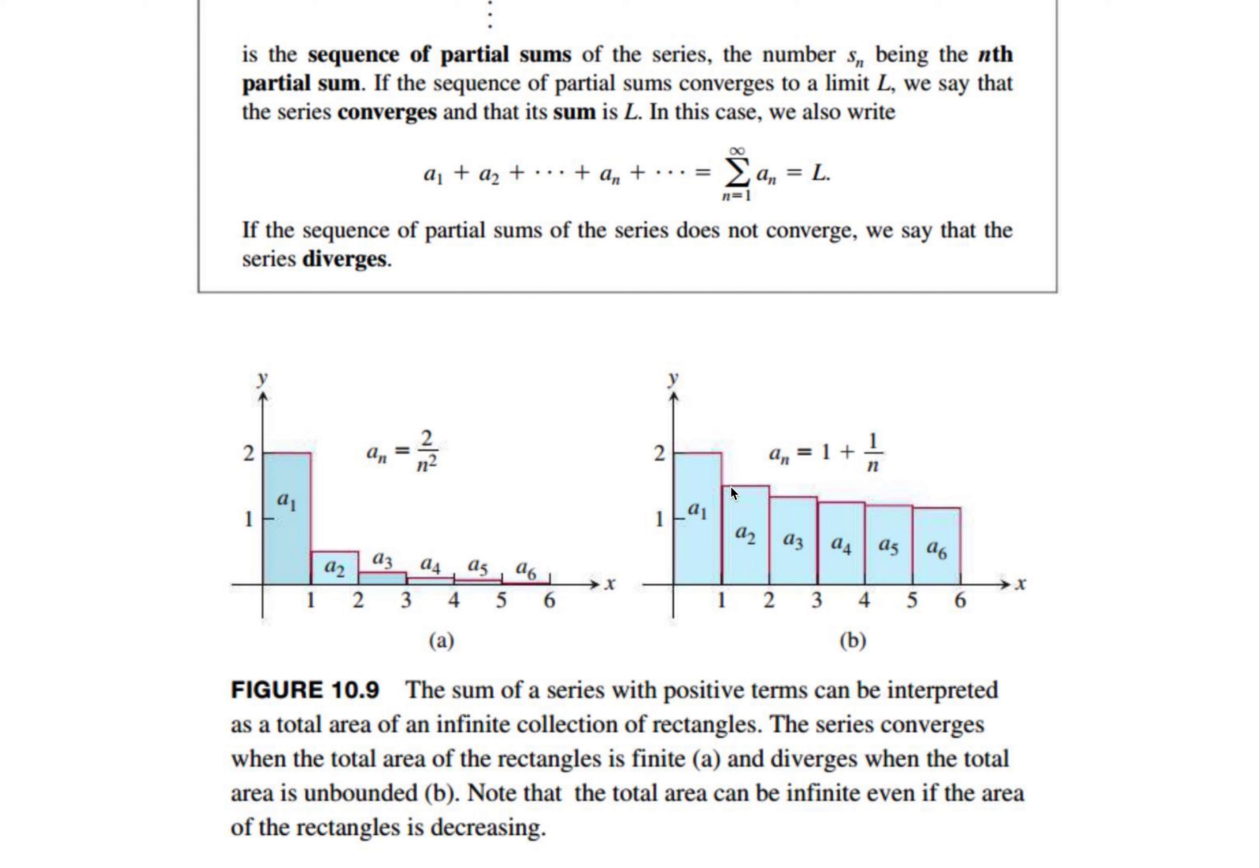The second one here, even though the rectangles are getting smaller, there is no limit to this series that's defined as 1 plus 1 over n. The total area of these rectangles, if you were to add them all up, it would go to infinity. It goes very slowly to infinity, but it does go to infinity.